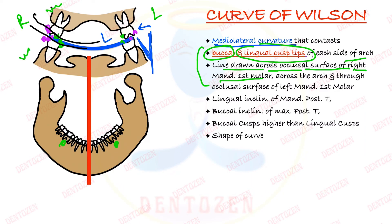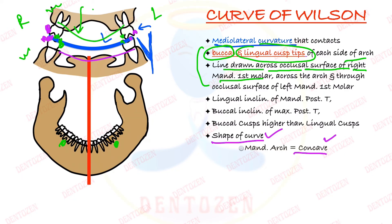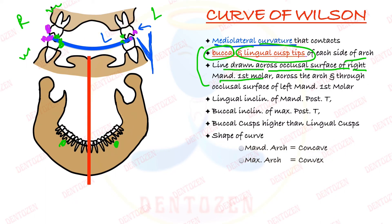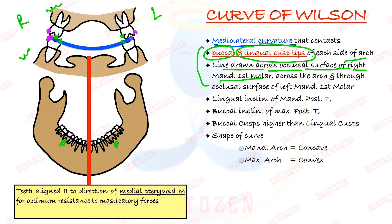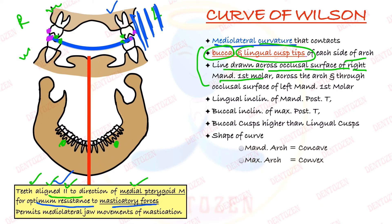A viva question: what is the shape of this curve? If we look from the mandible side, it appears concave. If we look from the maxillary side, it looks convex. So the shape of the curve of Wilson from the mandibular side is concave and from the maxillary side is convex. The functions of this curve: first, this arrangement makes the teeth parallel to the direction of the medial pterygoid muscle, providing optimum resistance to masticatory forces. Second, this arrangement permits mediolateral jaw movements during mastication.